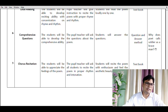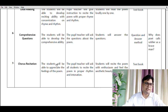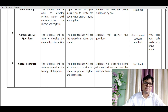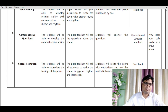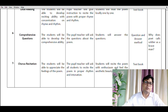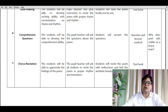The next teaching point is chorus recitation. Students are expected to appreciate the feelings of the poem. The pupil teacher will ask all students to recite the poem together with proper rhythm and intonation. Students will recite the poem with enthusiasm and feel the aesthetic beauty — this is why poems are included in the English subject. The teaching aid used is the textbook.